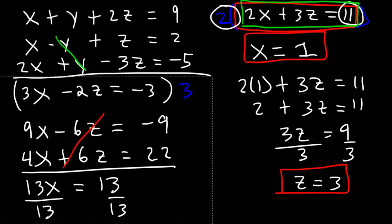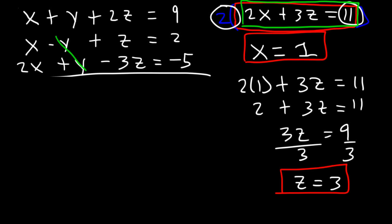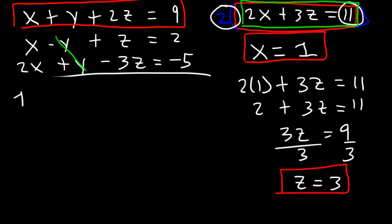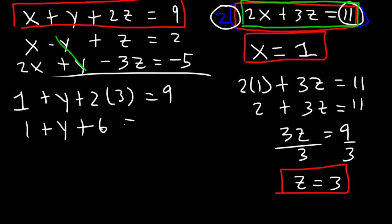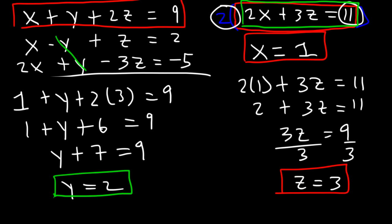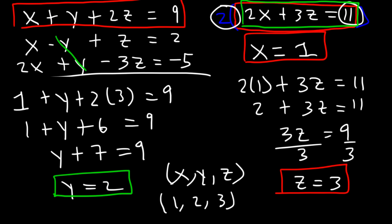So now the last thing we need to do is find the value of y. Let's use the very first equation. Let's replace x with 1 and z with 3. 2 times 3 is 6. And 1 plus 6 is 7. And 9 minus 7 is 2. So therefore, y is equal to 2. So our answer in (x, y, z) format is going to be (1, 2, 3). So that's it — now you know how to solve a system of equations with 3 variables.